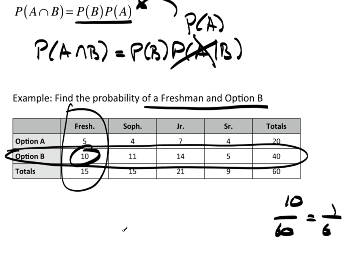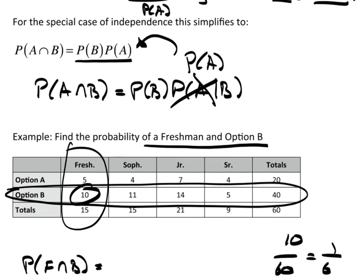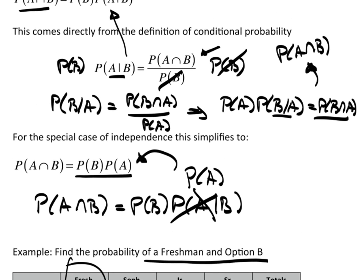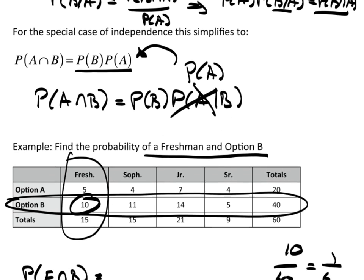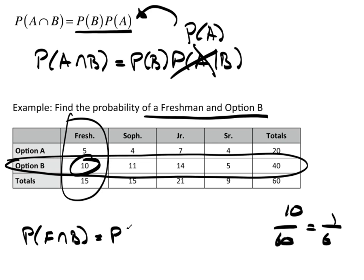But, let's use this. Let's use this rule up here. So, the probability of a freshman and option B is going to be equal to, go back up here if you don't recall. There we go. B times the probability of A given B. So, this is the probability of B times the probability of F, the freshman, given B.